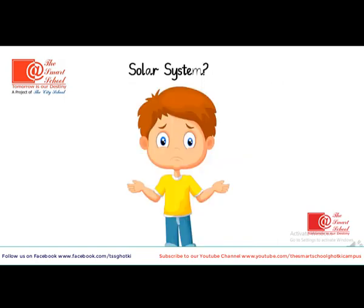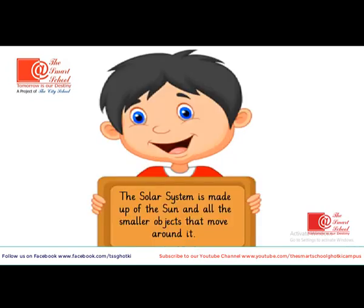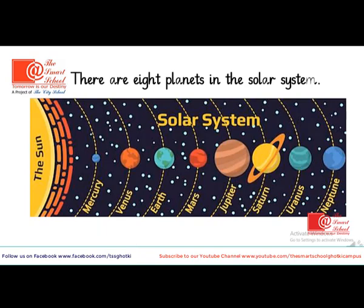Solar system — what is the solar system made up of? The solar system is made up of the Sun and all the smaller objects that move around it. There are eight planets in the solar system: Mercury, Venus, Earth, Mars, Jupiter, Saturn, Uranus, and Neptune.